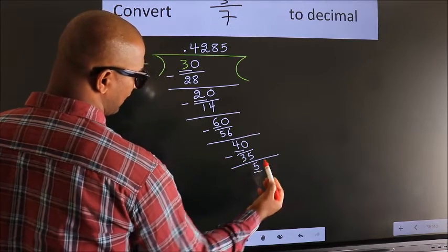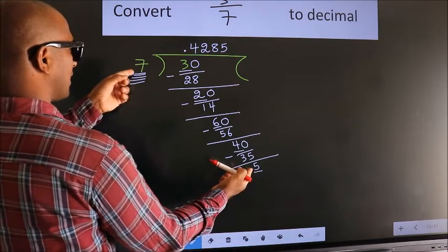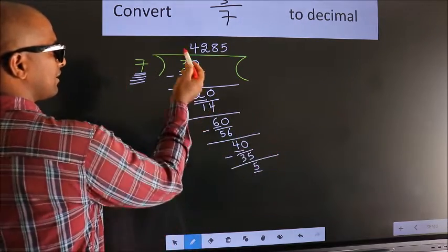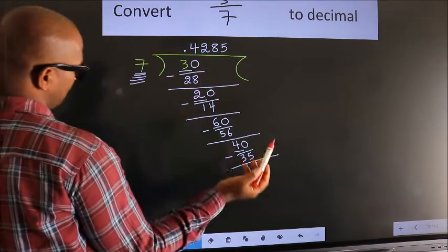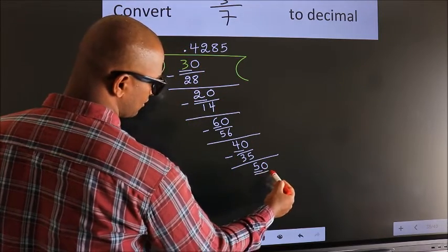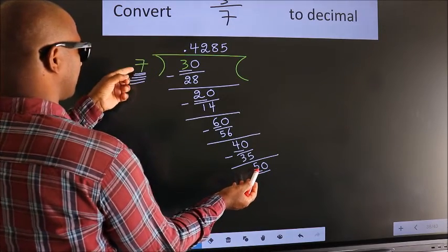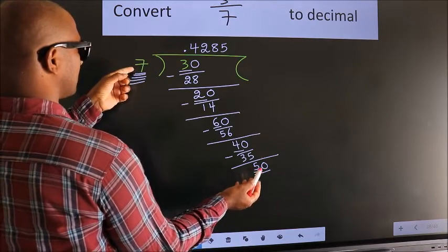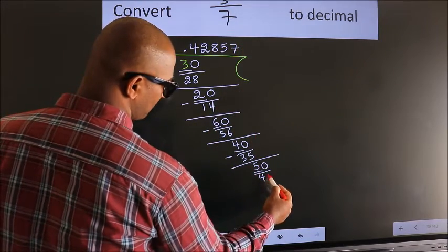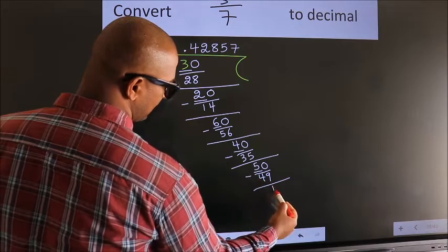Here we have 5, here 7. 5 is smaller than 7. And we already have the decimal, so we can directly take 0 — so 50. A number close to 50 in the 7 table is 7 sevens 49. Now we subtract. We get 1.